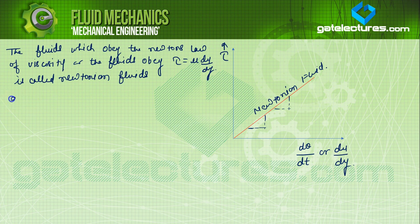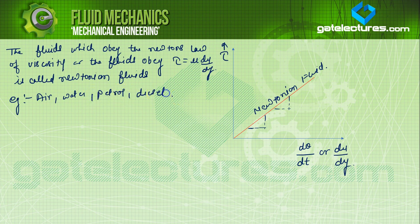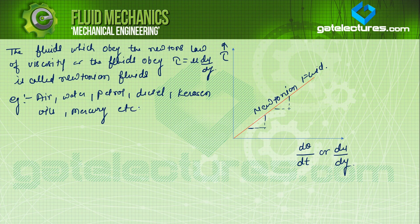Examples of Newtonian fluids: air, water, petrol, diesel, kerosene oils, mercury, etc. So from here one thing is clear — Newton's law of viscosity states that the shear stress is directly proportional to the rate of angular deformation, or shear strain, or velocity gradient.